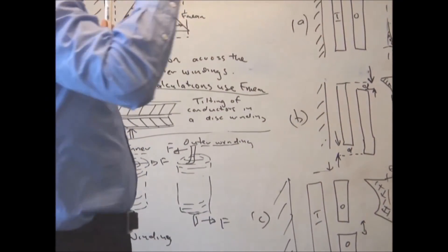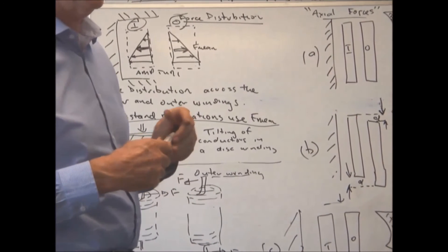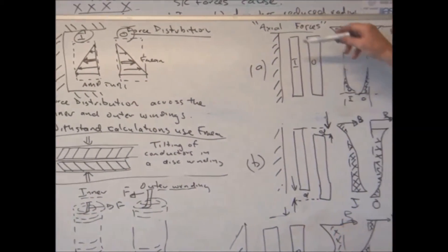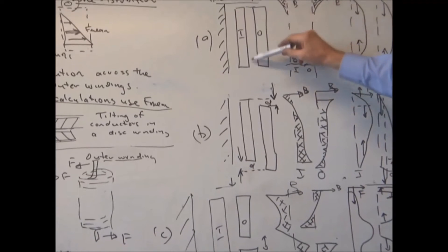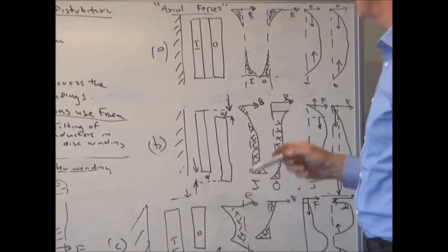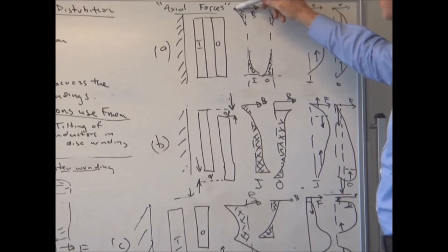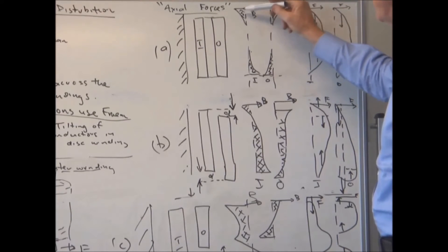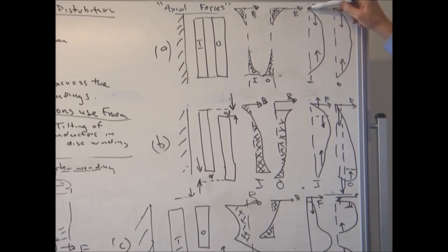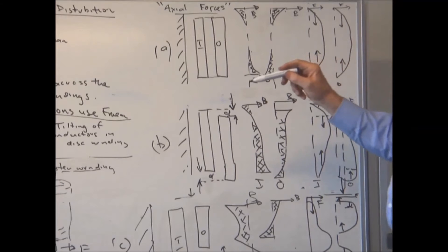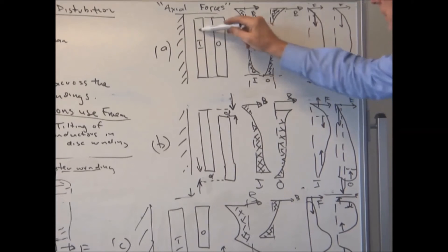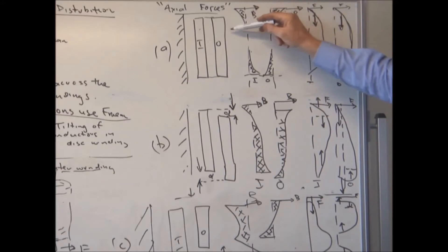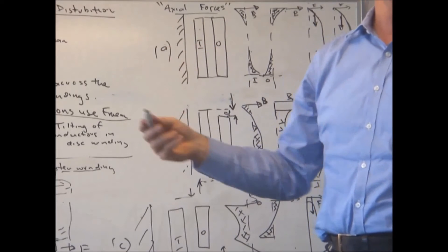Now, looking at combinations depending on how the windings are configured: here the inner winding and outer winding are drawn with the same length — they are not axially displaced. The leakage field on the inner winding looks one way, and the field on the outer winding has a corresponding shape. In terms of axial forces, the forces are pushing down on both windings symmetrically, gradually building up from the ends due to the shape of the leakage field.